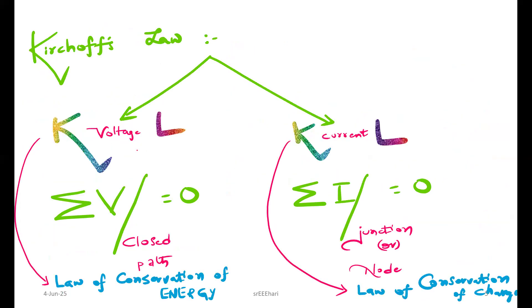Coming to Kirchhoff's laws: Kirchhoff's voltage law, Kirchhoff's current law. Sigma V equal to 0, sigma I equal to 0. For KVL we have a closed path, and this one is junction or node. Sigma here is algebraic summation. It derives from law of conservation of energy and this comes from law of conservation of charge.